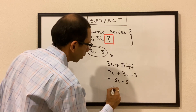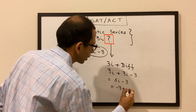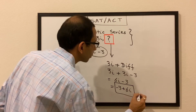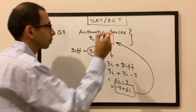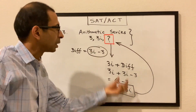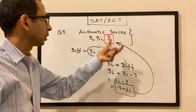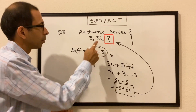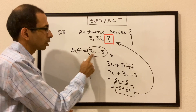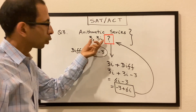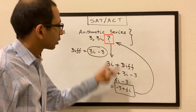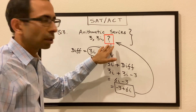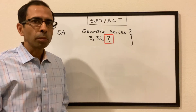So 3i + 3i - 3 equals 6i - 3, or written as -3 + 6i. That is the next term of this arithmetic series. Pretty straightforward — we found the common difference and added it to the second term.